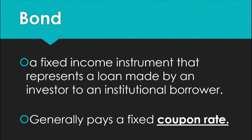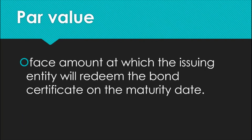Most bonds are fixed rate bonds, which means they generally pay a fixed coupon rate. Before we proceed further, it is important that we understand the following terms so that we may comprehend bond valuation better. Par value is the face amount at which the issuing entity will redeem the bond certificate on the maturity date. Note this is not necessarily the market value of the bond; this is simply an amount stated in the bond certificate.